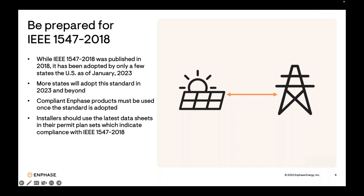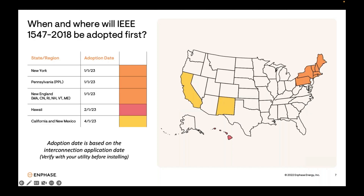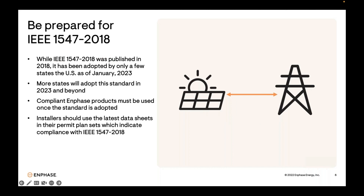While the standard was published in 2018, to date it's only been adopted in a few states: the New England states, New York, Pennsylvania, and Hawaii. California is going to adopt this new standard on April 1st. In states where these standards are adopted, installers should only use compliant Enphase products. We also recommend using the most recent data sheets in building plans, since current data sheets specify at the bottom that the product is compliant with IEEE 1547-2018.